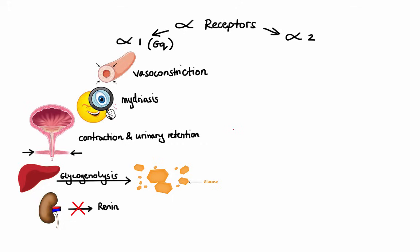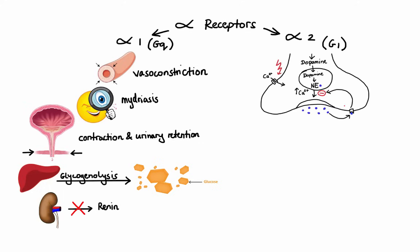What about alpha-2 receptors? Alpha-2 receptors are Gi protein-coupled receptors. They are primarily located on presynaptic nerve endings, and when activated, they cause a decrease in production of intracellular cAMP, which in turn leads to inhibition of further release of norepinephrine. Additionally, alpha-2 receptors can be found on the pancreatic islets, and when activated, they lead to decrease in insulin secretion.